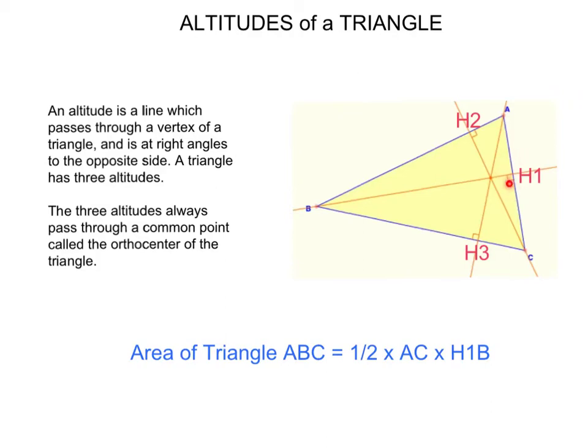The three altitudes always pass through a common point called the orthocenter of the triangle, which is this one here.